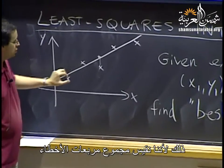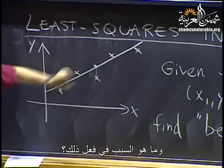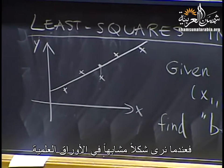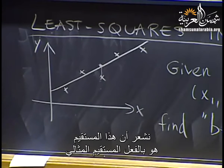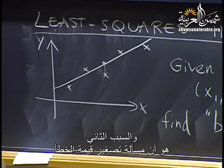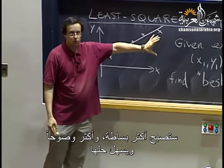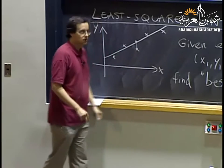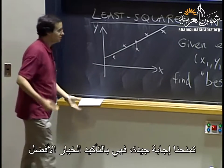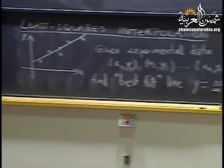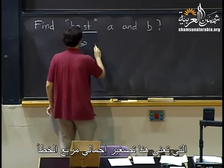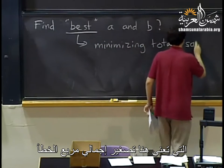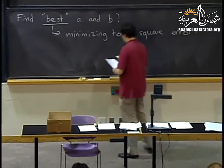One approach gives a particularly nice formula for A and B, and that's why it's universally used — least squares. We measure the sum of the squares of the errors. Part of the reason is it looks good in scientific papers, and the second reason is the minimization problem we get is particularly simple, well-posed, and easy to solve. We'll have a nice formula for the best A and the best B.